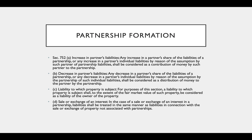Section 752 deals with liabilities—specifically the partnership assuming liabilities of the partner and the partner assuming liabilities of the partnership, which affects the outside basis. Under Section 752(a), any increase in a partner's share of the liabilities of a partnership, or any increase in a partner's individual liabilities by reason of the assumption by such partner of partnership liabilities, shall be considered as a contribution of money by such partner to the partnership—so the basis will go up. Under Section 752(b), any decrease in a partner's share of liabilities shall be considered a distribution of money to the partner—so the basis will go down.